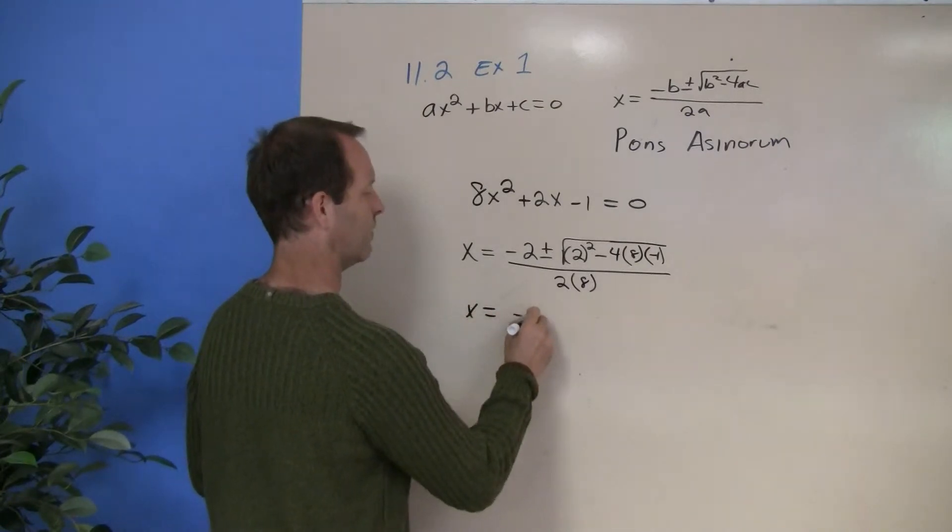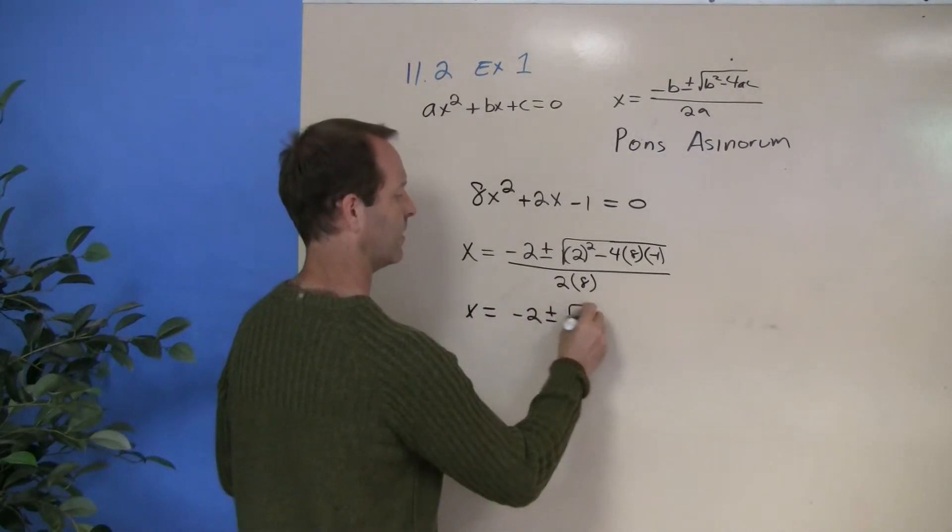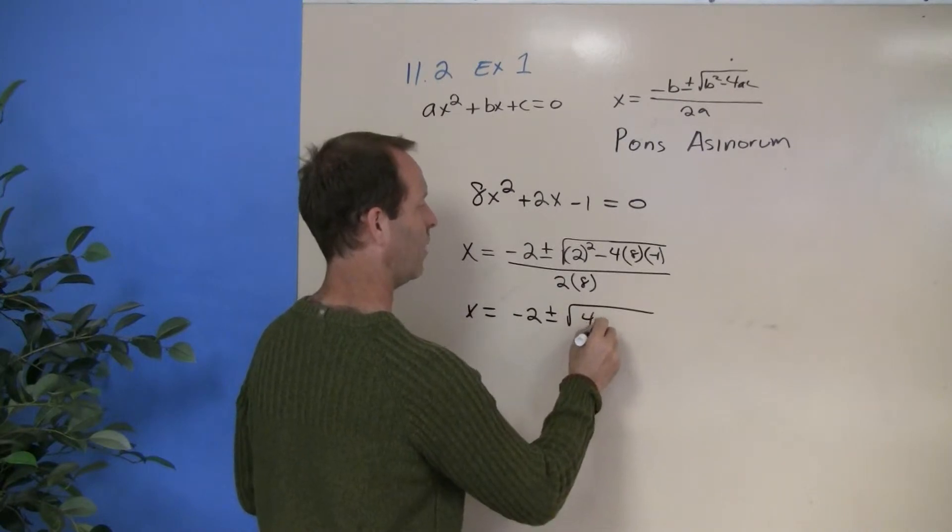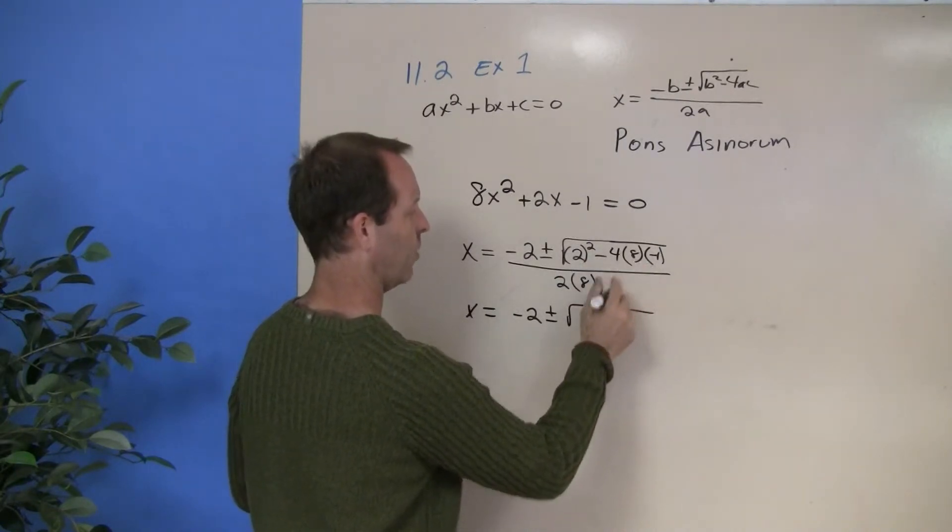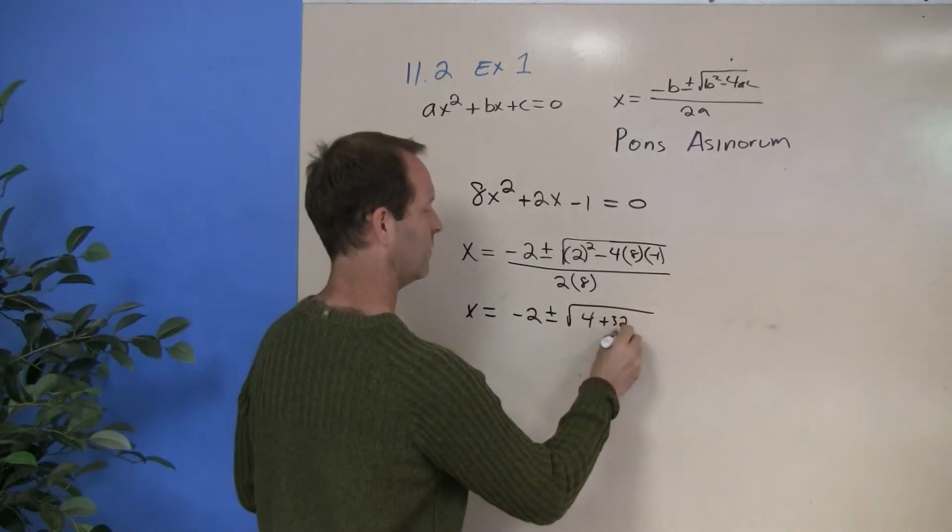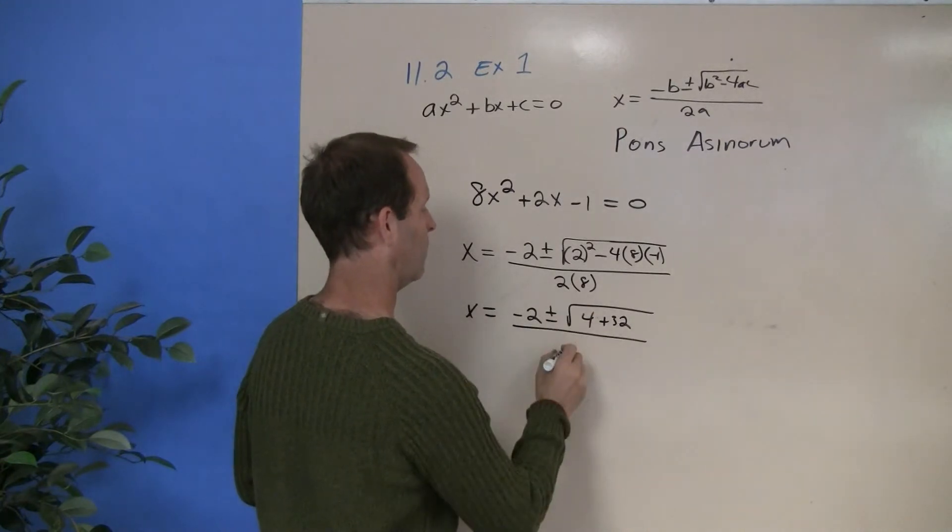X equals negative 2, plus or minus 2 squared, which is 4, minus 4, 8, 1, that's plus a 32, all over a 16.